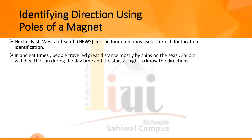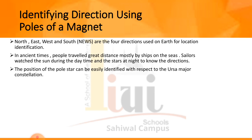Page number 148 shows a diagram marking the four directions: North, South, East and West. The position of the pole star can be easily identified with respect to the Ursa Major constellation. As the sun rises from the east, one can easily identify east. The west lies opposite to the east.